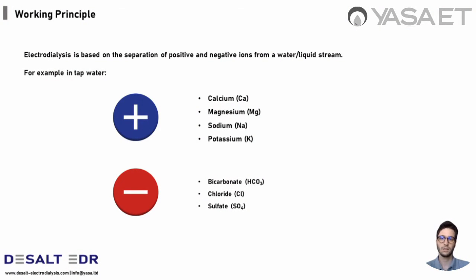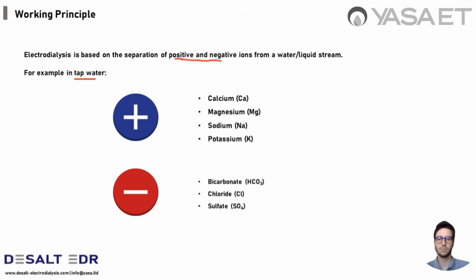The working principle of electrodialysis is that it separates positive and negative ions from any solution — any water or liquid stream. For instance, in tap water we have positive ions which could be calcium, magnesium, sodium, and potassium, and on the other side we have negative ions such as bicarbonate, chlorides, and sulfate.